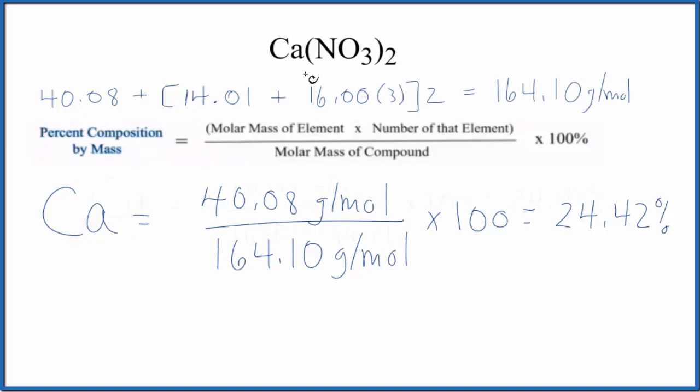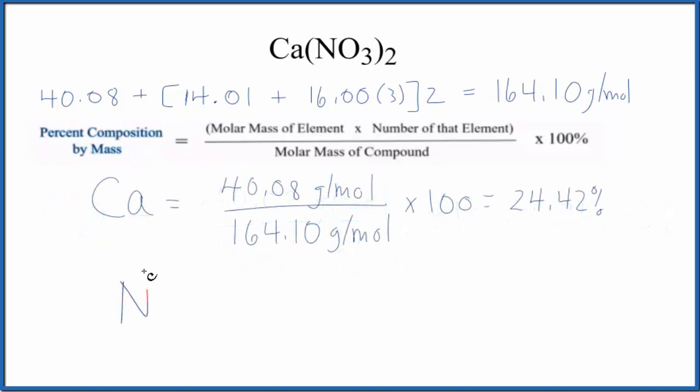Let's figure out nitrogen. On the periodic table, the molar mass for nitrogen is 14.01. Note that the grams per mole are on top and bottom, so they cancel out. I'm not going to write them here.